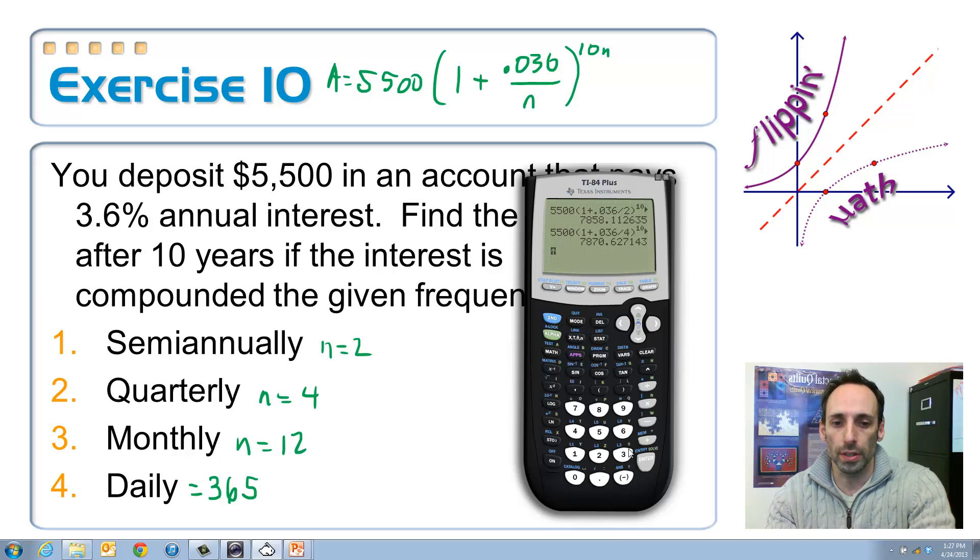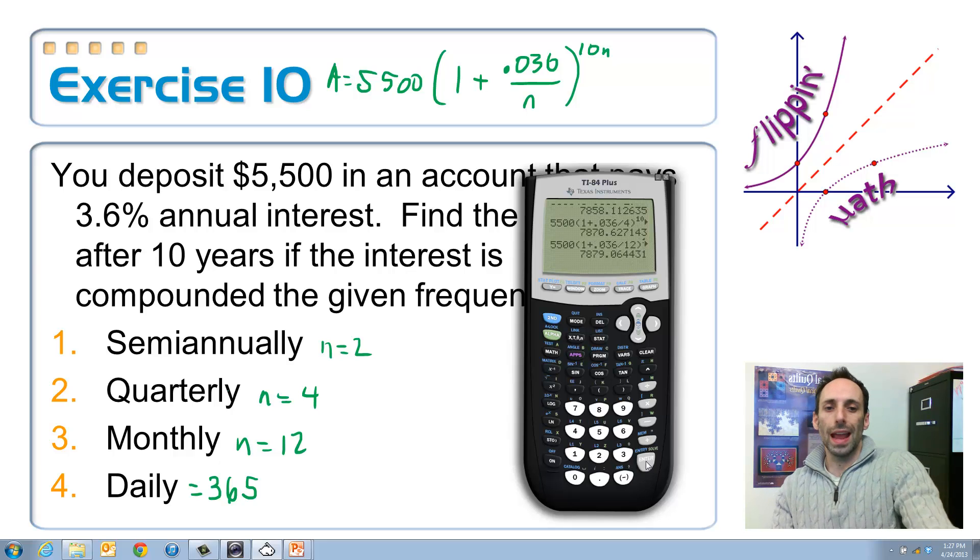Anyway, so monthly. Let's call this thing up again. Second, enter. And then change the 4 to a 12. So right here, that one's easy, the exponent. This one, you've got to be careful. So whenever I go to type in the 12, it's going to start typing over the parentheses, so you have to insert. Second, insert, now put the 2. $7,879.06. So it still went up some. Hmm, that's also interesting. Do you think it's going to continue to go up?